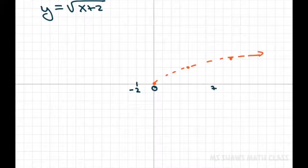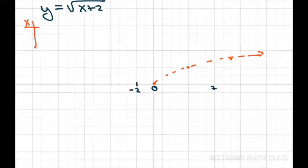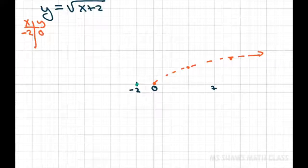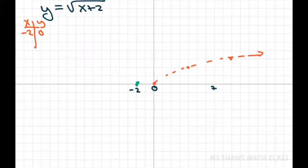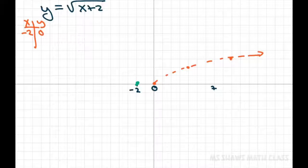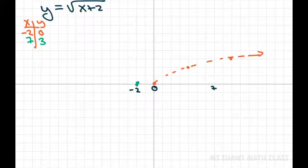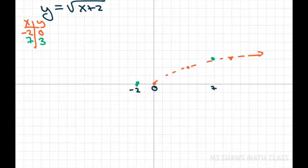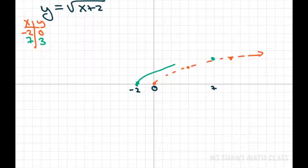So we did the table of values where negative 2 goes to 0. So that would start here. And then 7, when you plug in 7, that goes to 3. Like we did before. So 7 would go to 3. And we're only graphing that little portion.